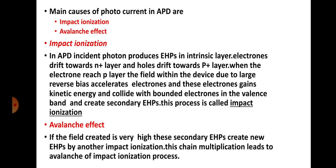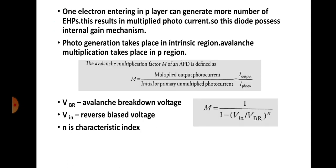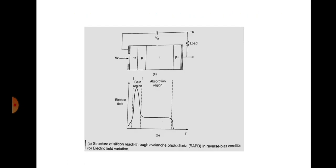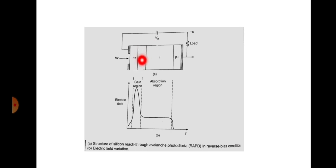Due to the avalanche effect, high photocurrent is produced. One electron entering the p layer can generate a large number of electron-hole pairs, resulting in multiplied photocurrent. Therefore, the APD possesses an internal gain mechanism. Photo generation takes place in the intrinsic region, and avalanche multiplication takes place in the p region. The photon absorbed in the intrinsic region produces an electron-hole pair, which moves to the p region where further generation occurs due to impact ionization, increasing with higher reverse bias.